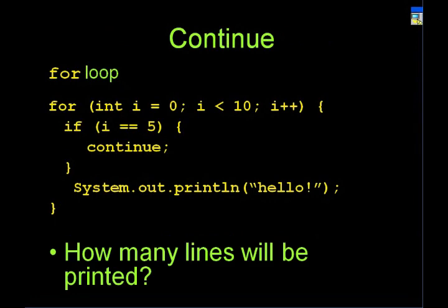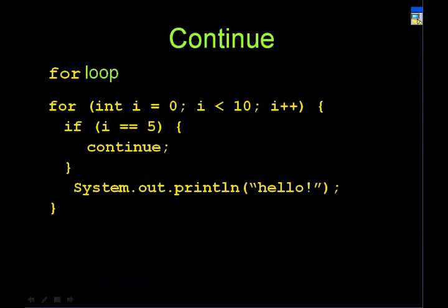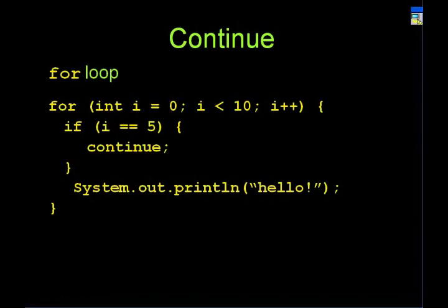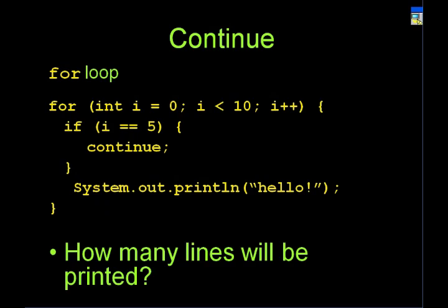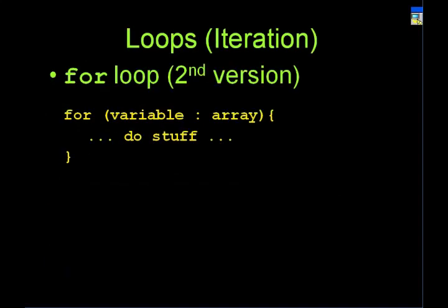The 'continue' keyword: instead of breaking out of the loop, it forwards the loop to the next iteration. When i is five, continue says stop executing any more code in this loop body and go to the next one — it jumps directly to i++, so i becomes six, and then it runs the rest of the code. Continue just says: skip this step, do not execute any more code in this loop body, just go to the next iteration. Nine lines will be printed.